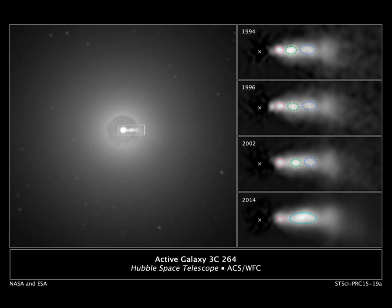Jets may also be influenced by a general relativity effect known as frame dragging. Most of the largest and most active jets are created by supermassive black holes in the center of active galaxies such as quasars and radio galaxies, or within galaxy clusters. Such jets can exceed millions of parsecs in length.